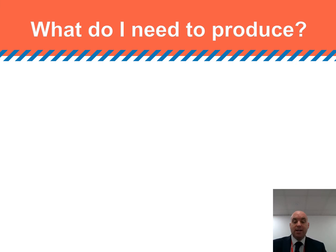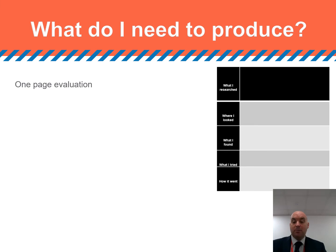So what is it that you actually need to produce as a result of undertaking your research? What we're looking for as a basis is a one-page evaluation of what you found out. You need to complete a five-box model — this will be emailed to you. First of all: what it was you researched; where you looked for the information, whether it be the internet, books, journals, or somewhere different; what you actually found out from your research; what you tried, whether that be in the classroom, a staff meeting, or a shared resource with colleagues; and then eventually how it went.